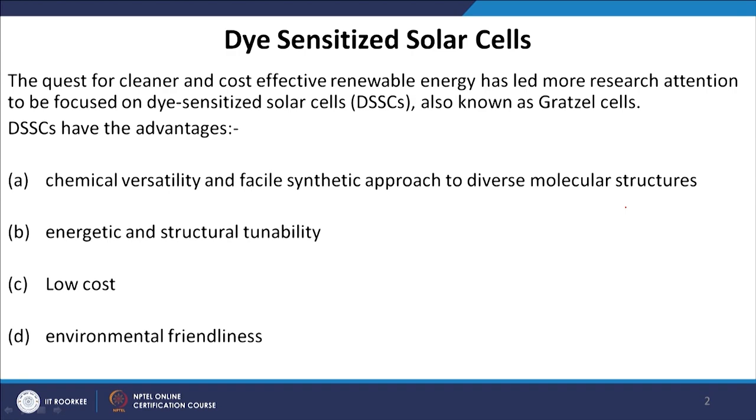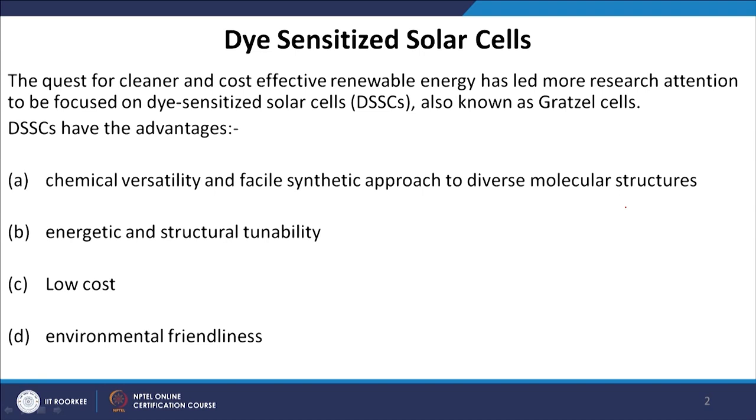The third important point is the low cost — this DSSC device has a cost much lower than first and second generation technology. The last point is environmental friendliness. Since we use organic materials to fabricate these devices, for example titanium dioxide (TiO2), this is a material used in everyday life: in toothpaste, in house paint, and also as an antibacterial agent. These products are biocompatible and environmentally friendly, so this kind of solar cell can be called a green approach to fabricating solar cells.